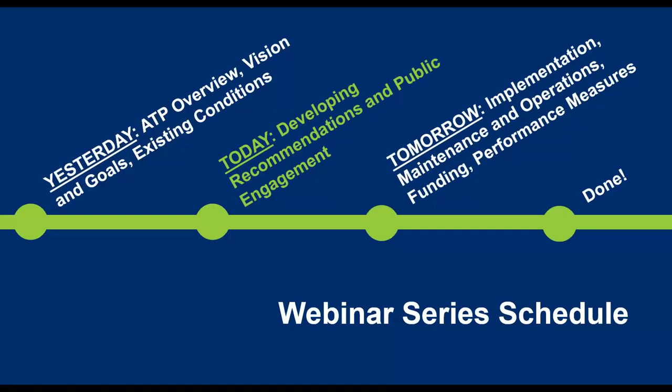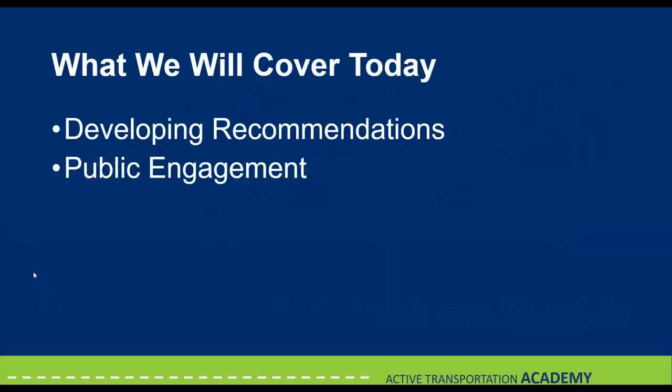Yesterday, we did some detail about how to implementations, funding, and performance measures. For today, specifically under recommendations, we'll be talking about facility types, how to develop a facility toolkit, talking about design users, as well as facility selection and guidance, and how to form all of those steps into a network rationale for your proposed active transportation system, and supportive programming.